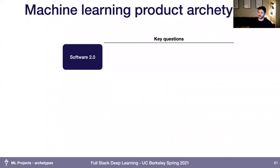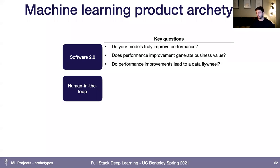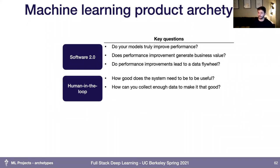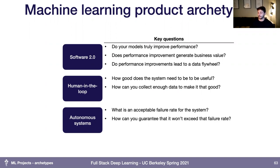A few questions to ask yourself for each archetype. For Software 2.0: are you actually improving performance of the system? Does that performance improvement translate to value for your business? And do those improvements lead to a data flywheel? For human in the loop: how good does the system actually need to be to be useful? And how can you collect enough data to make it that good? For autonomous systems: what is an acceptable failure rate? How do you guarantee your system won't exceed that failure rate? What guardrails can you put in place? And how inexpensively can you label data from the system?